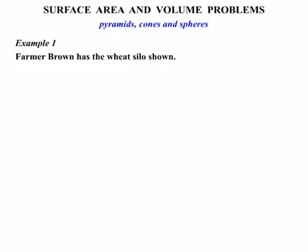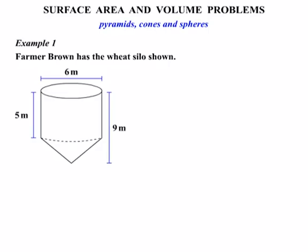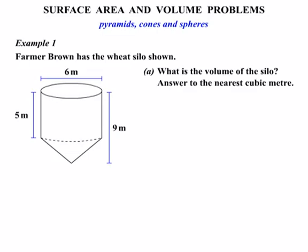In this example we're told that Farmer Brown has the wheat silo shown. We can see that silo drawn for us there. In part A we're asked what's the volume of the silo. We need to give our answer to the nearest cubic meter.